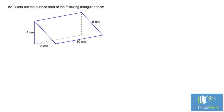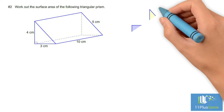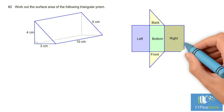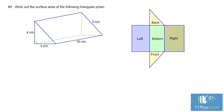Number two: work out the surface area of this triangular prism. A net for this triangular prism will look like this. We can now work out the area of each face.